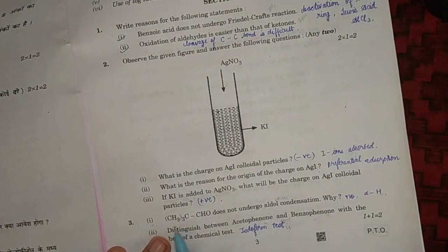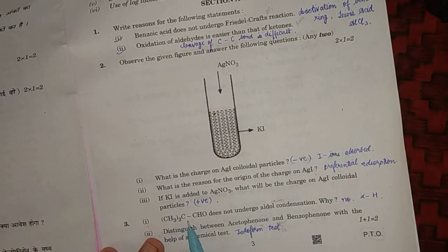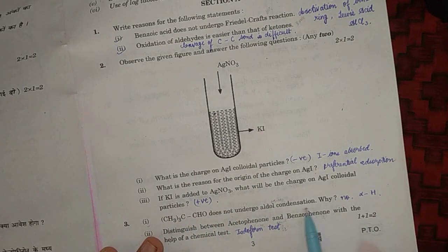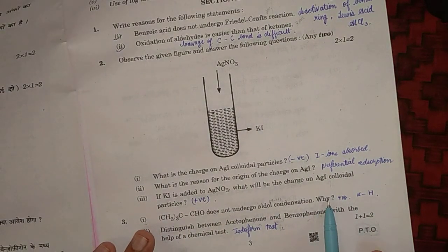Third question: (CH3)3CCHO does not undergo aldol condensation. The main reason is because it does not have alpha hydrogen attached to this carbon.